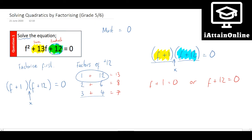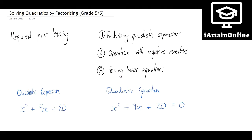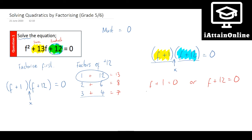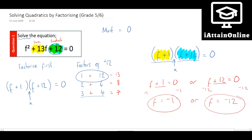So now you end up with two linear equations, which is why being able to solve linear equations is really important. If I take away 1 from both sides of the first equation, f = −1. Or if I take away 12 from both sides of the second equation, f = −12. Those are your two solutions. You can always check them by putting them back in: (−1)² + 13(−1) + 12 = 1 − 13 + 12 = 0. The same works for −12.